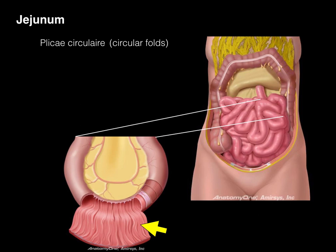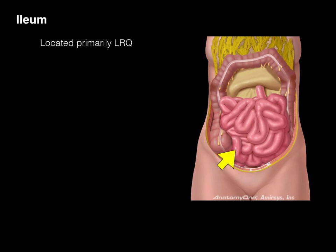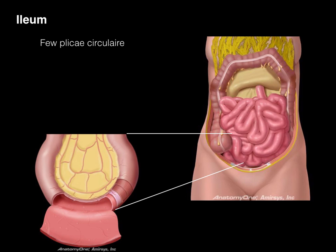The pancreas dumps digestive enzymes into the duodenum that chemically break down carbohydrates to glucose, fats to fatty acids and glycerol, and proteins to amino acids. The circular folds — plicae circulares — increase surface area for absorption of those nutrients into the blood. There are a lot of circular folds in the jejunum. The ileum is located primarily in the lower right quadrant, and as you go along the small intestine there are fewer circular folds because less absorption occurs, the majority having happened more proximally.